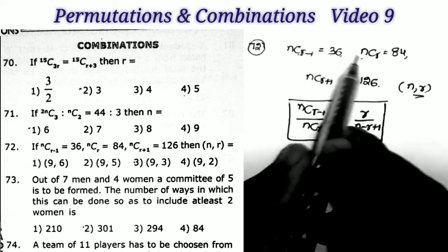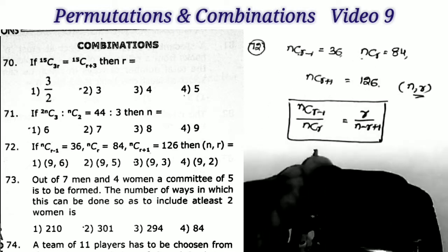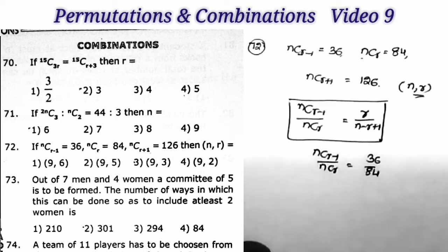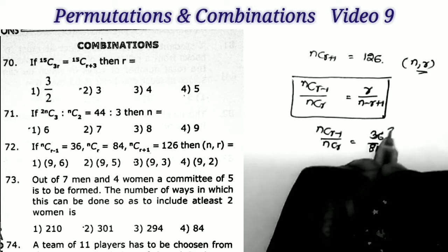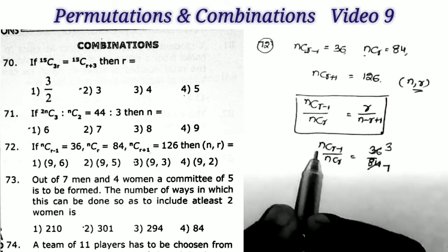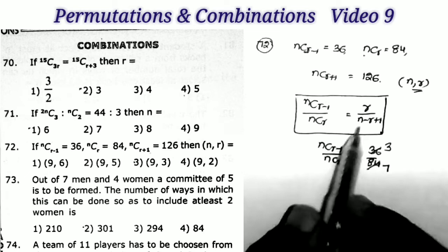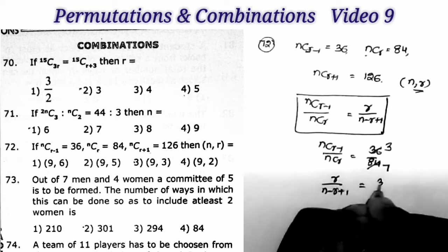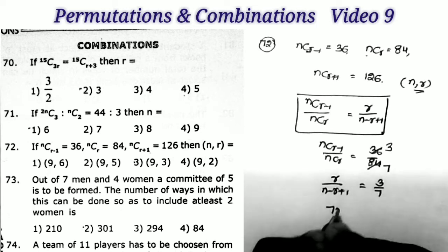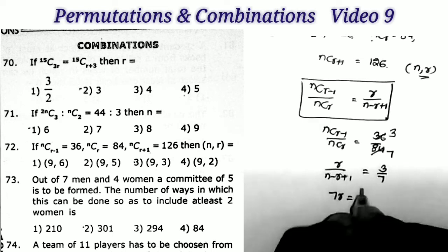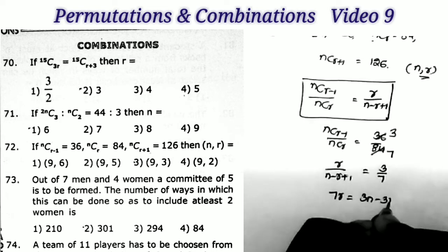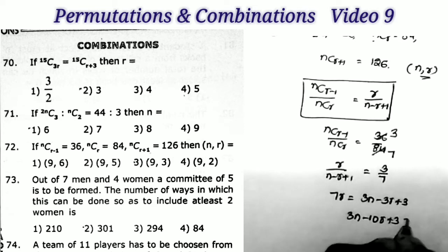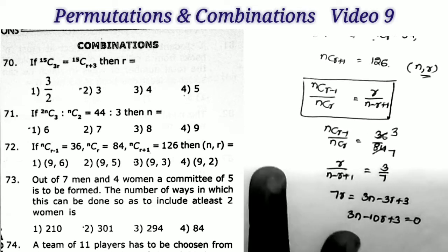Taking the cross product: 7R = 3N − 3R + 3, which gives 3N − 10R + 3 = 0. Now checking the options by verification.